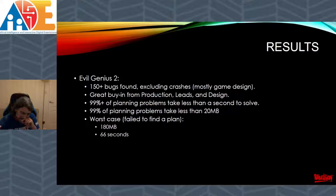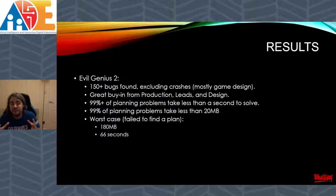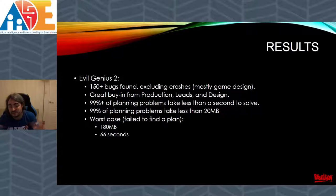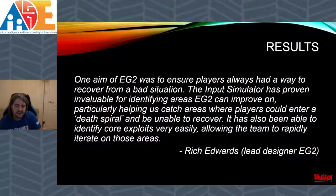The results: we found about 150 bugs, excluding crashes — mostly game design bugs where we reached a state where we couldn't progress due to a bug in an objective or furniture, or went into some kind of death spiral where the entire lair was unmanageable because no minions would do anything anymore. Because we found such weird bugs, it got great buy-in from production leads and design, who are very happy with the advantages of this new input sim. In terms of planning performance, it took less than a second to solve most problems using less than 20 megabytes. The worst case was when we planned for a massive problem that had no solution — that took about 180 megabytes and over a minute before we gave up by extending the number of states we allowed to expand.